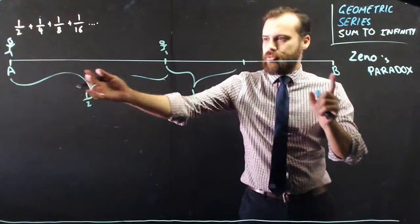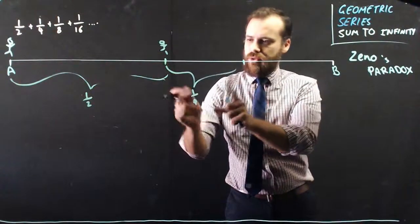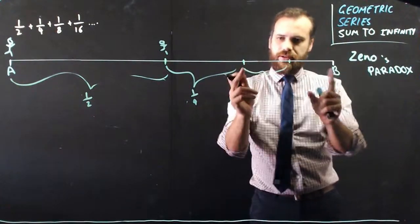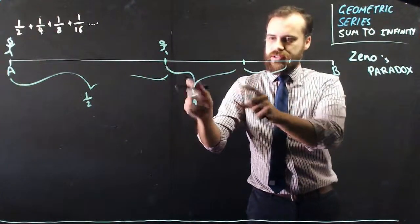So that's one quarter of the whole, right? And if that was half, that's a quarter. And then he needs to travel half of this distance, which is half of this distance, which is one-eighth.